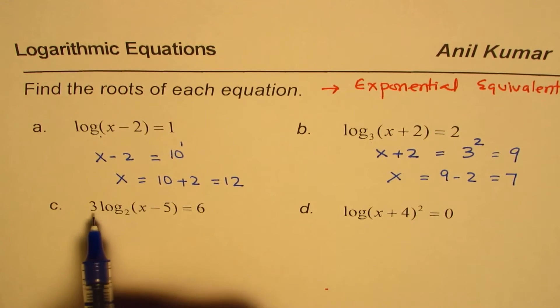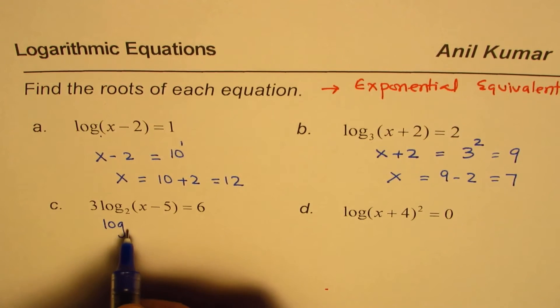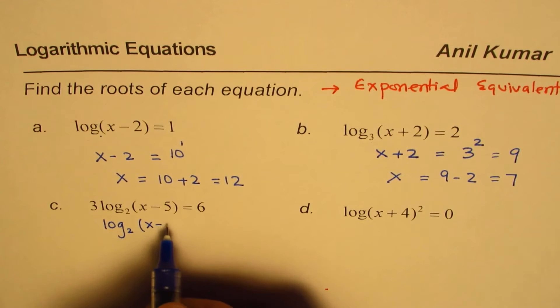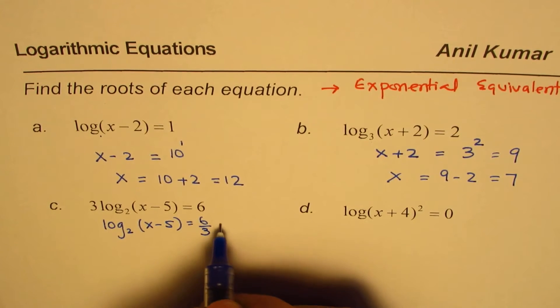Let's do this one. First, you should divide by 3. When you divide by 3, you get log to base 2, x minus 5 equals 6 divided by 3, which is indeed 2.